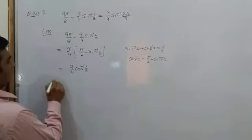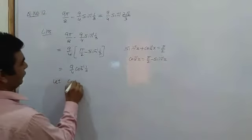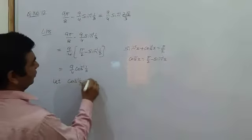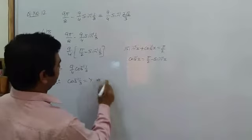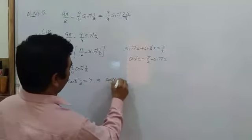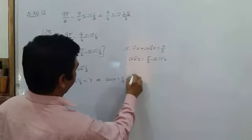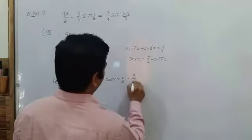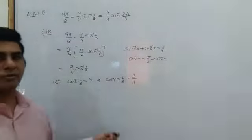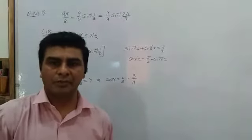So for that let's take cos inverse 1/3 is equal to y, which implies cos y is equal to 1/3, which is given by base upon hypotenuse.